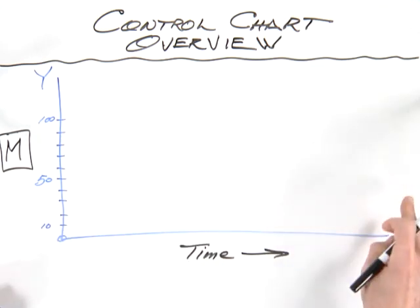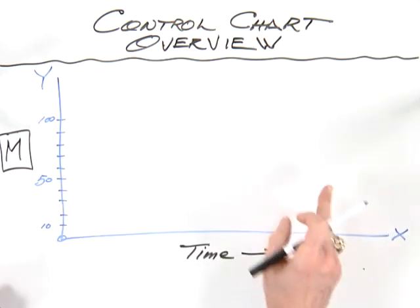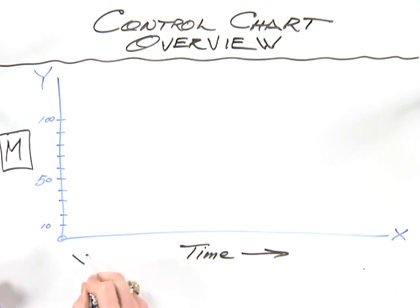Now the median, X with a tilde above it, gives us a center point. It's also known as the 50th percentile.